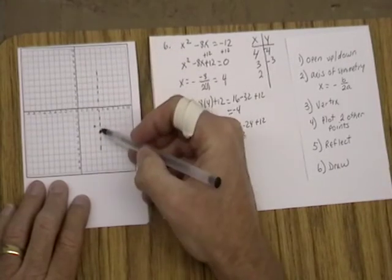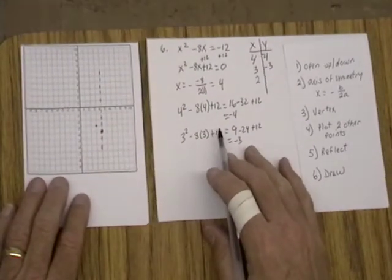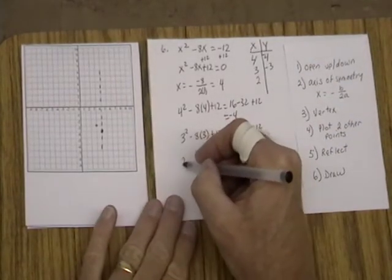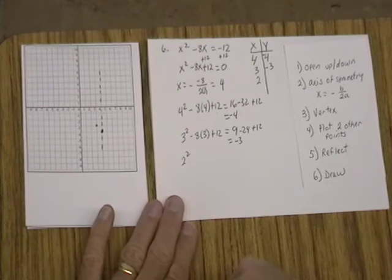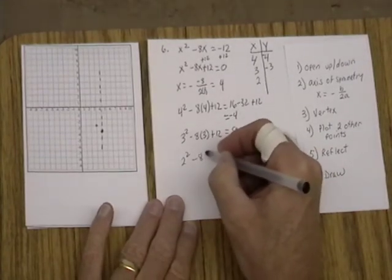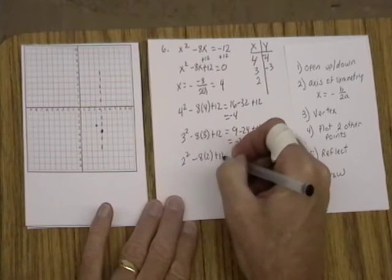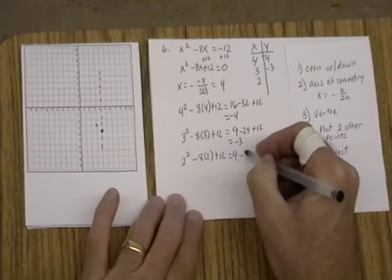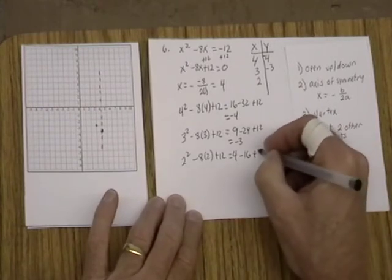And as you can see, we're approaching 0. We're getting closer to 0. And so we try 2. So we get 2 squared minus 8 times 2 plus 12. And that's going to equal 4 minus 16 plus 12.